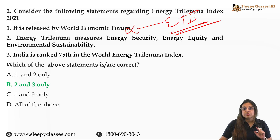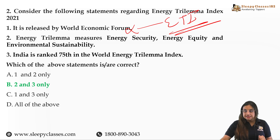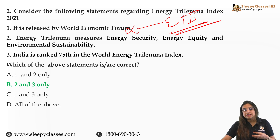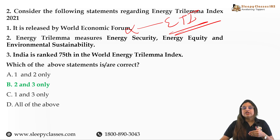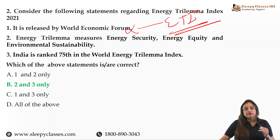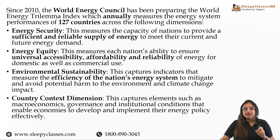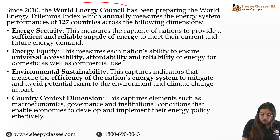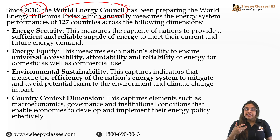So don't confuse the two. The Energy Trilemma measures Energy Security, Energy Equity and Environmental Sustainability — these three dimensions are very difficult to achieve simultaneously, which is why this index exists. Countries that are able to achieve them are ranked higher; India is at 75th rank. The World Energy Council has been releasing this index every year since 2010.